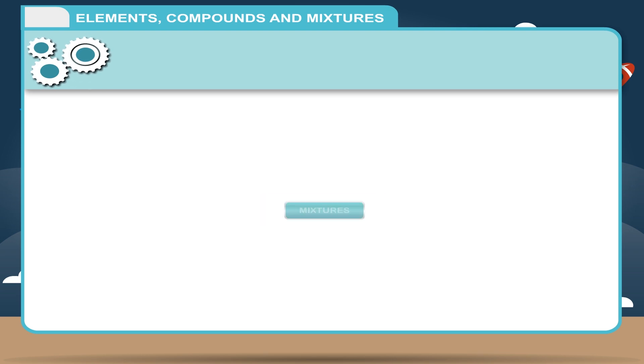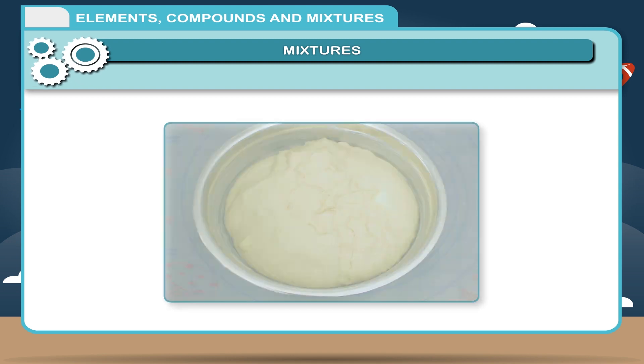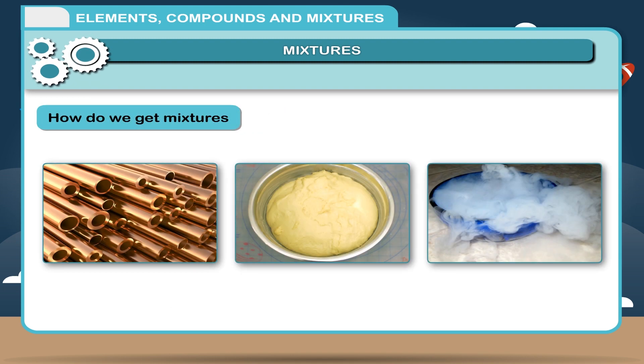Mixtures: A mixture is an impure substance. It contains two or more kinds of elements or compounds, or both, physically mixed together in any ratio. How do we get mixtures? Mixtures can be formed by mixing matter of different states.